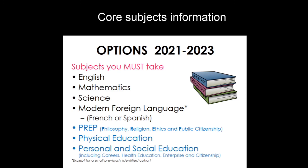There are a number of other subjects that are also part of our core provision, which include prep, physical education and PSHE. These are covered throughout the timetable during the week and give a well-rounded education. Each of those three subjects is not examined, although with prep there is an RS and ethics course that can be opted into, and with PE there is a GCSE that can be opted into should students wish to work towards a qualification.